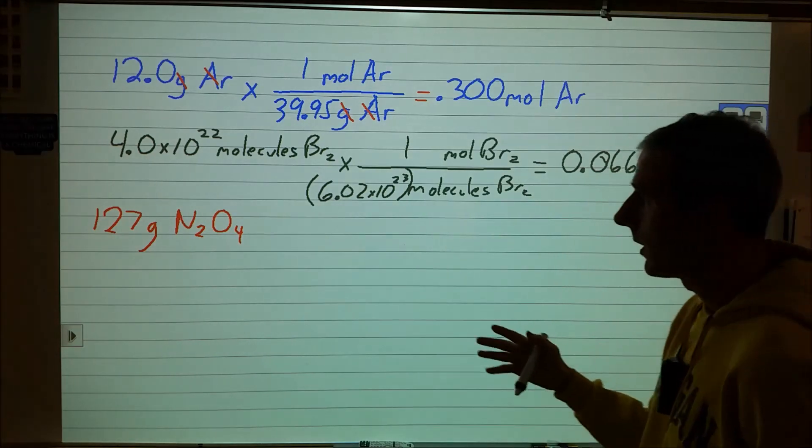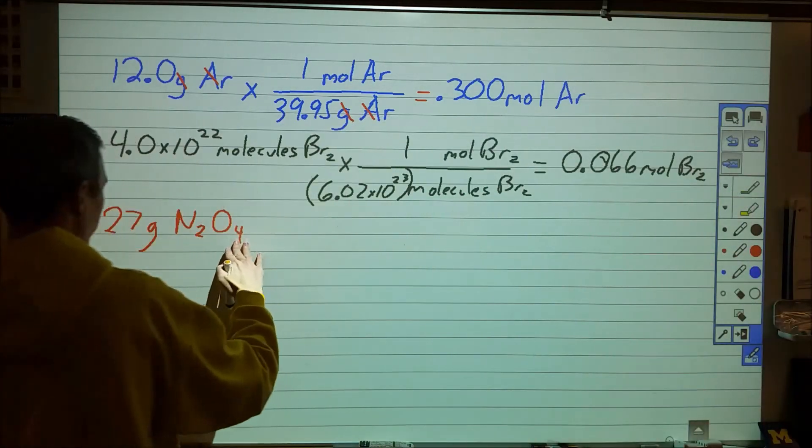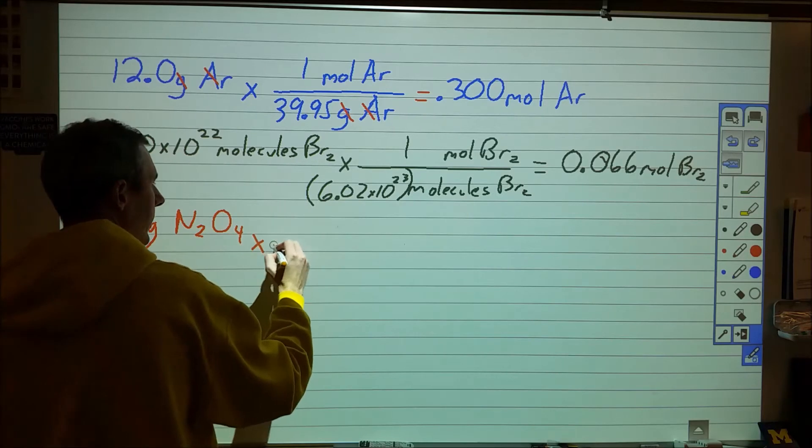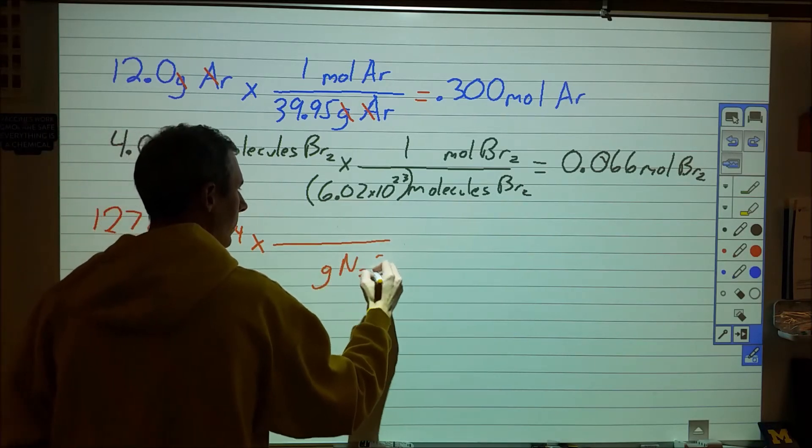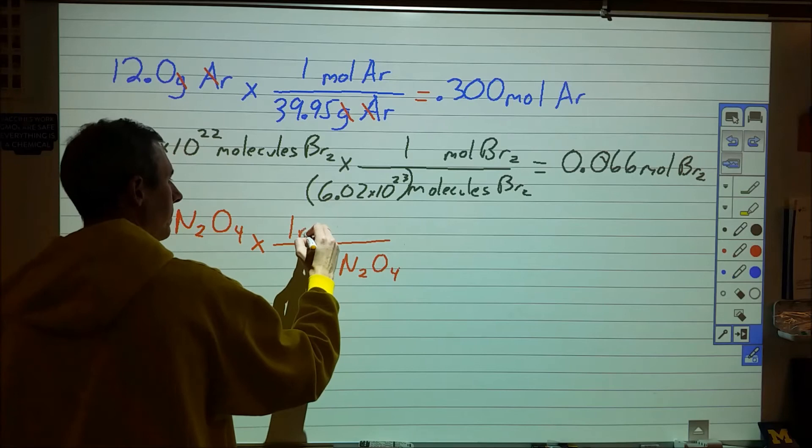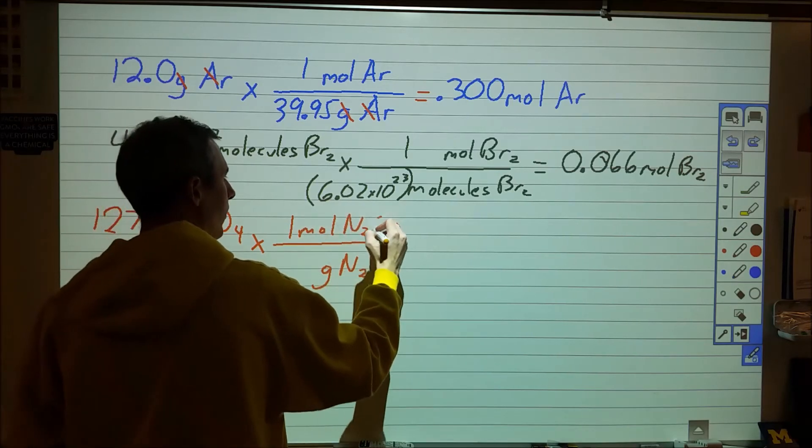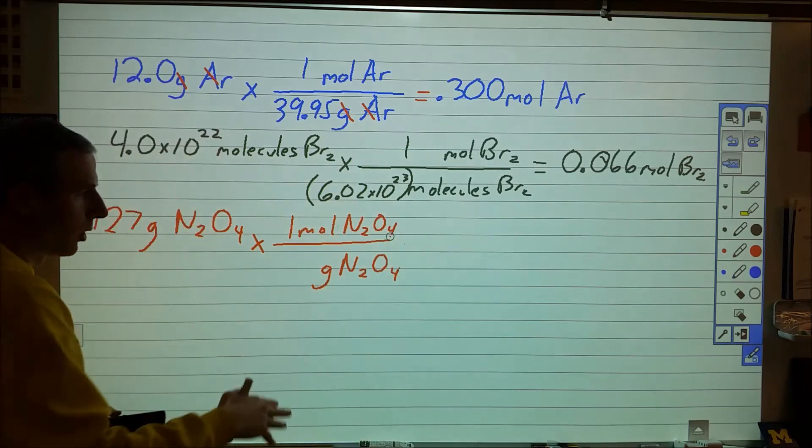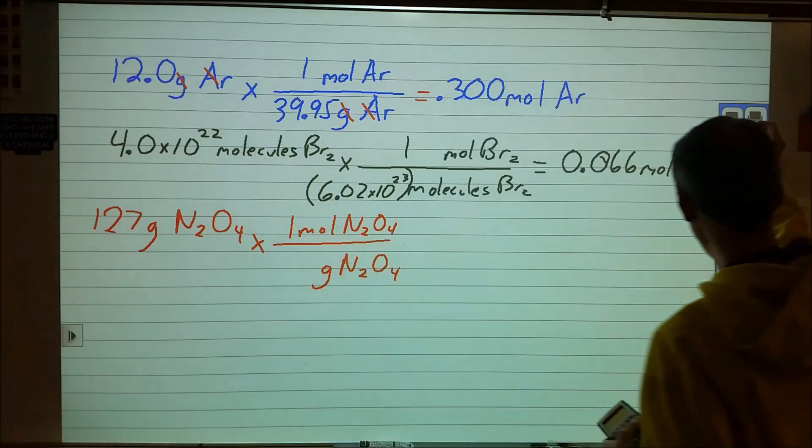Then the last one here, we've got 127 grams of N2O4. So we're going to take that and we're going to put grams of N2O4 down here, one mole of N2O4 up here. So for molar mass, we're going to have to flip to the other side. We need N2O4.